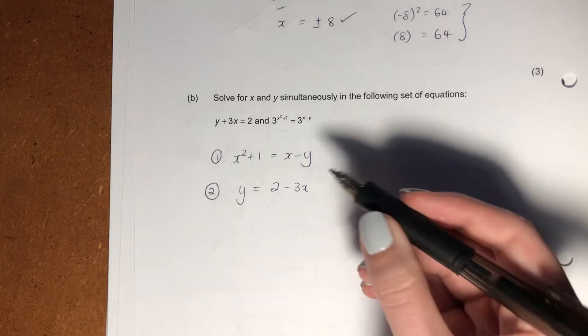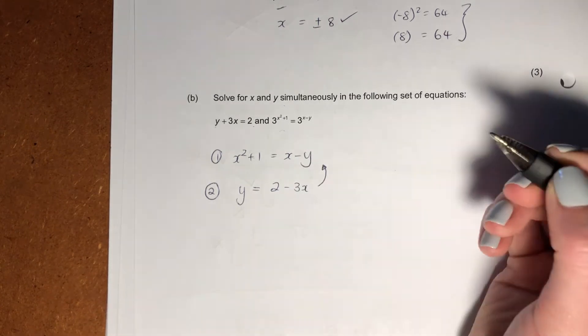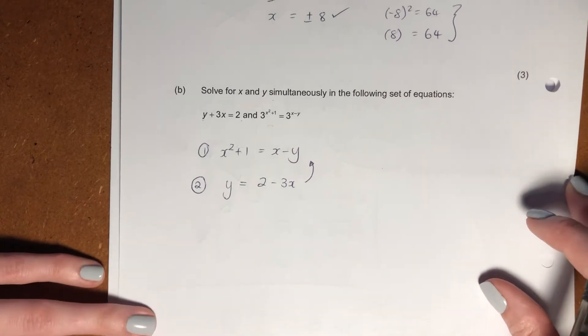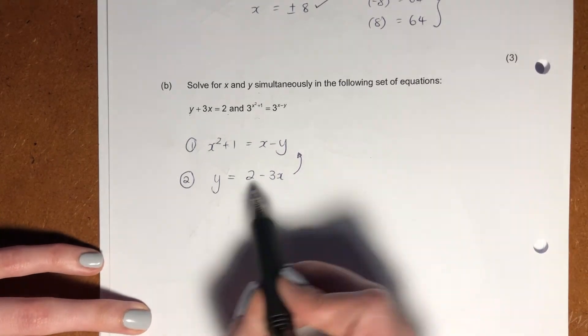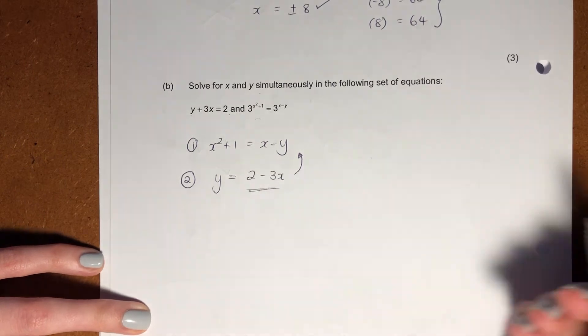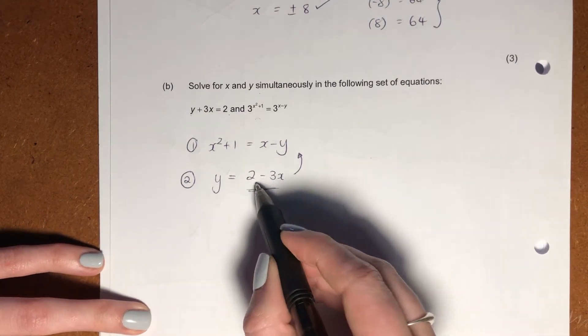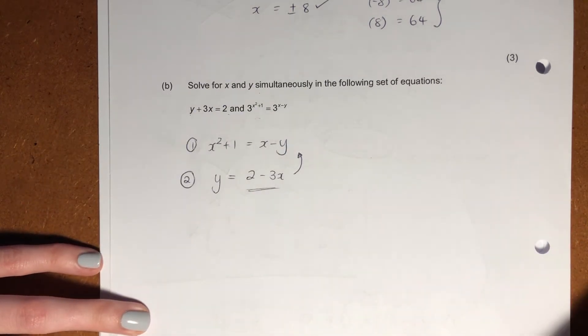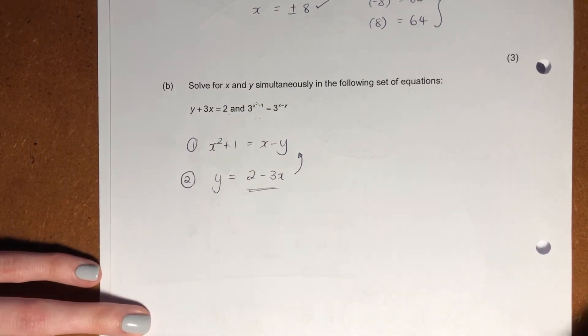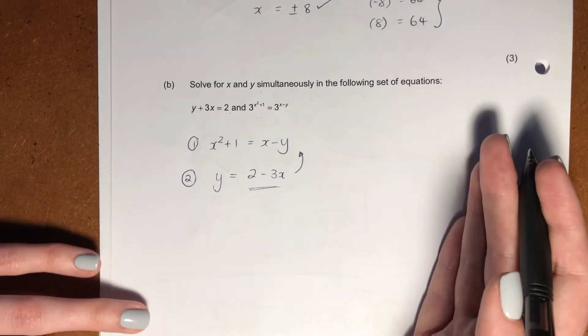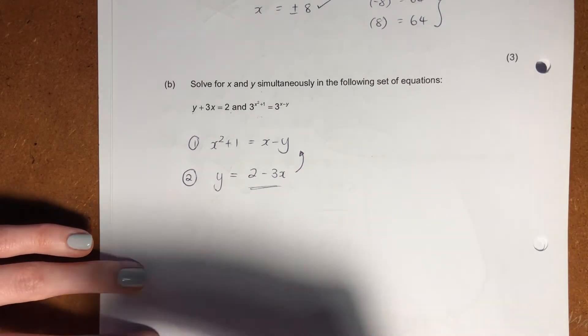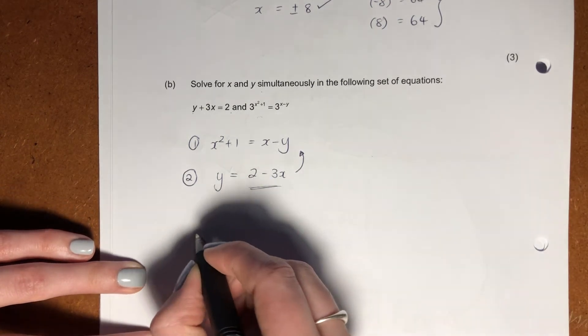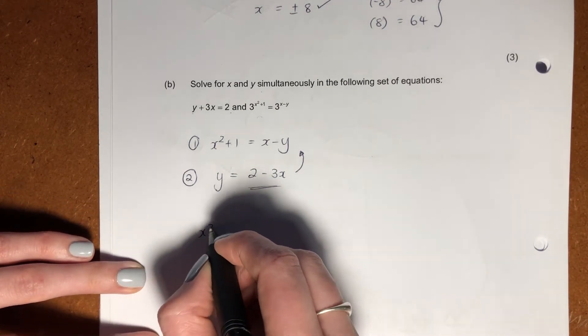So now I'm going to sub equation 2 into equation 1. You could be saying, Margie, why are you doing that? Well, the reason being is that I now know what y is in terms of x. If I put that in to this equation here, then the equation only has one variable, which is x, which is fantastic. It's what we want. Remember, when we want to solve for variables, we're wanting to get equations in terms of individual variables so that we can solve for them.